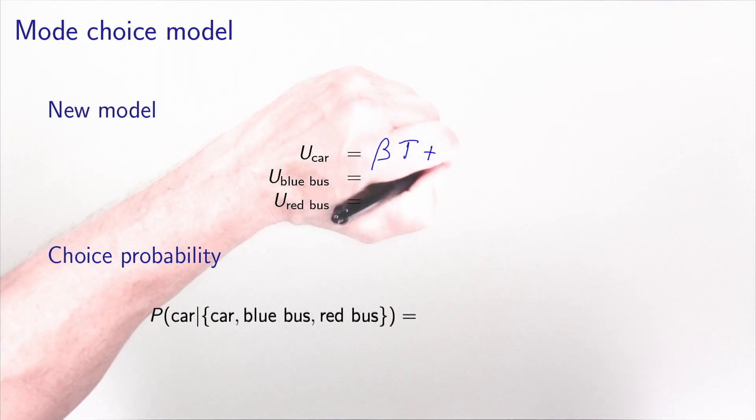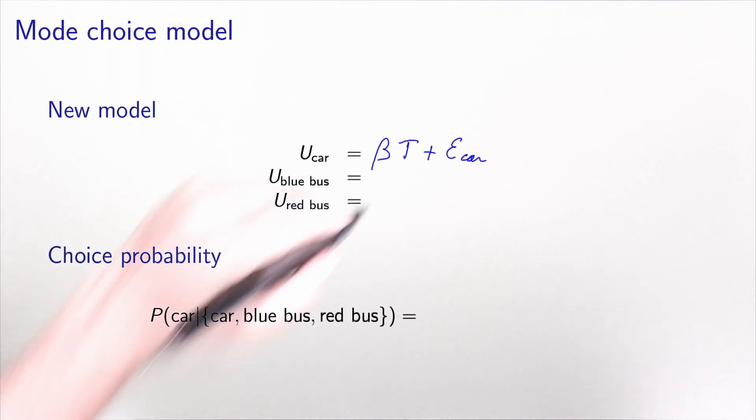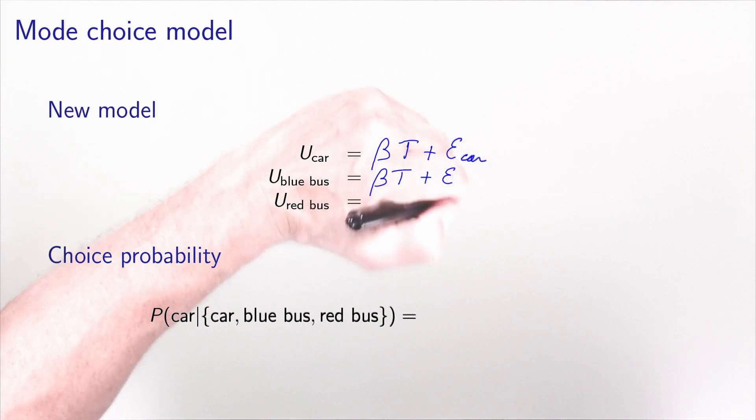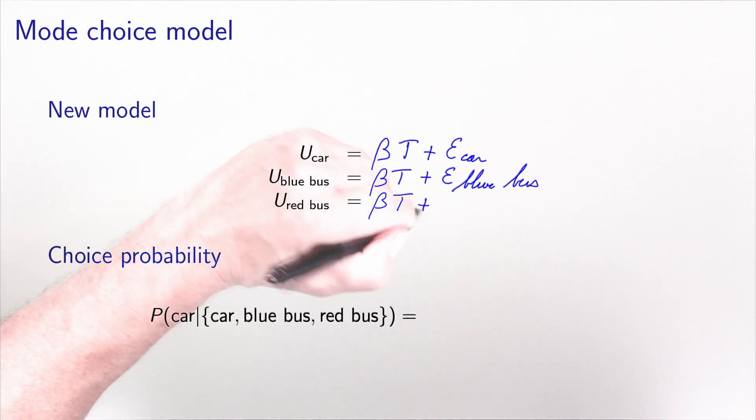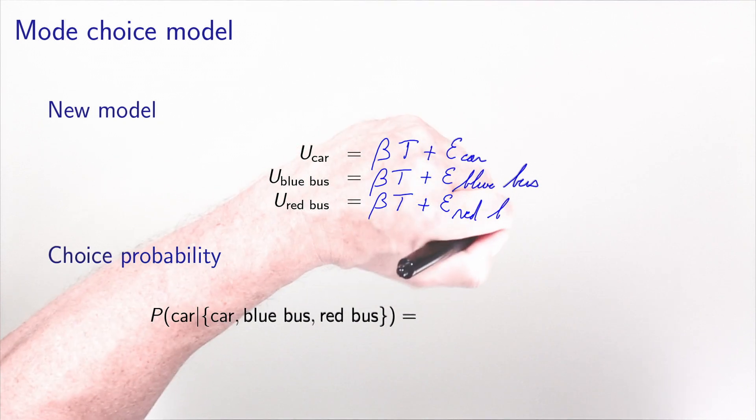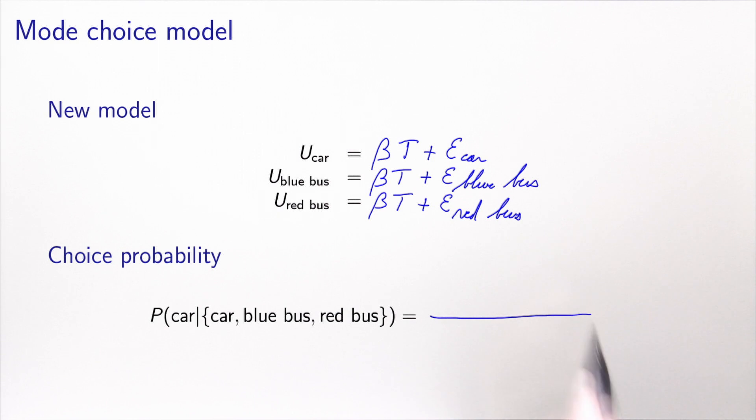So for car, we have beta t plus epsilon car. For blue bus, we have beta t plus epsilon blue bus. And for red bus, we have beta t plus epsilon red bus. And again, we can assume a logit model and write the choice probability for car, which is e to the beta t divided by e to the beta t plus e to the beta t plus e to the beta t. And this is equal to one third.